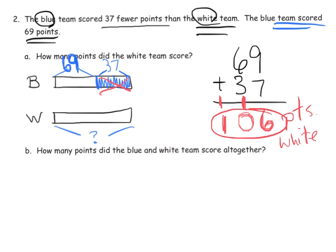The white team scored 106 points, and the blue team scored 69 points. So now the question is, how many points did the blue and white team score all together? So that means we're going to add, and I'm going to kind of not draw the tape diagram.